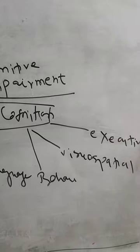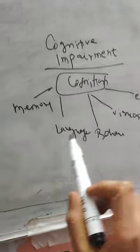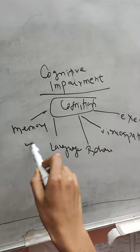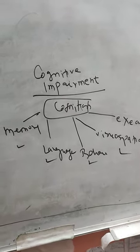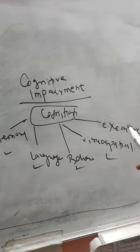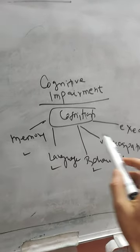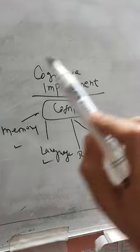So memory, language, behavioral skills, visual spatial function, and executive function - these are the five basic domains of cognition.